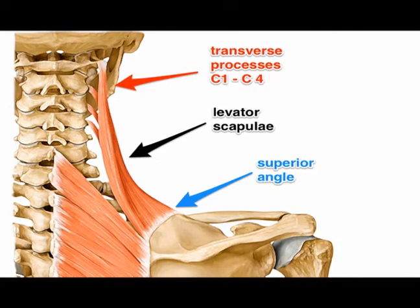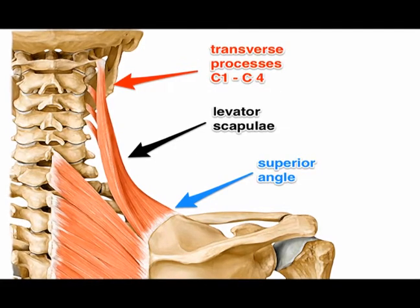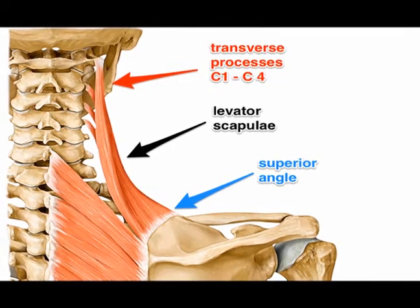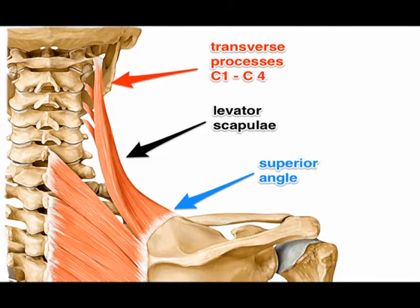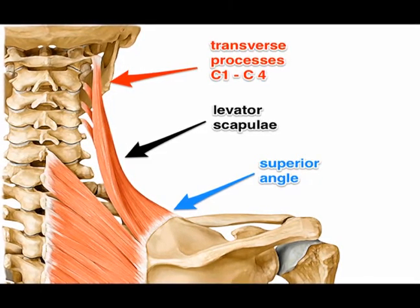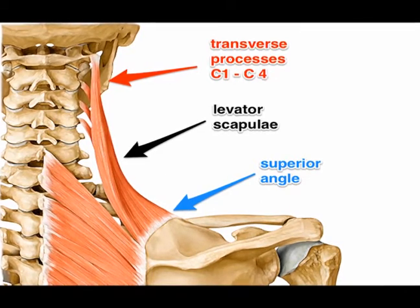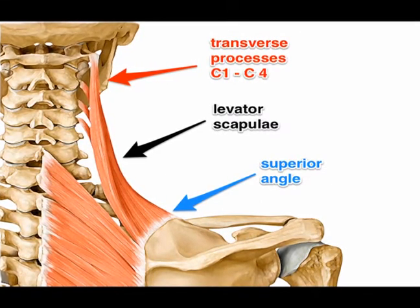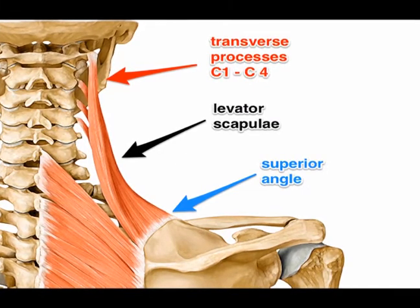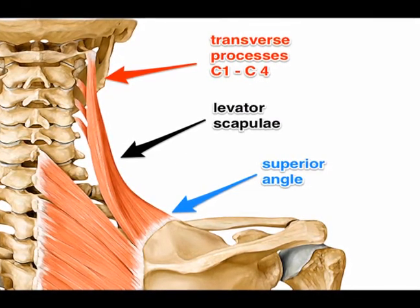The levator scapula muscle originates on the posterior tubercle of the transverse process of cervical vertebrae C1 through C4. It runs inferior and attaches to the superior medial border of the scapula, at the insertion point between the superior angle of the scapula and the spine of the scapula.